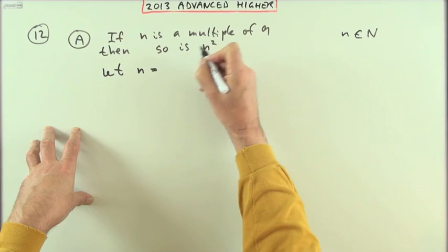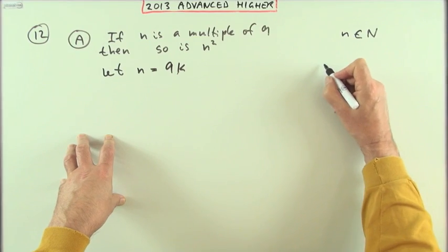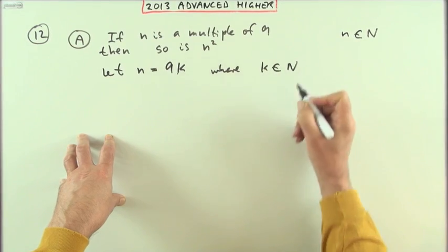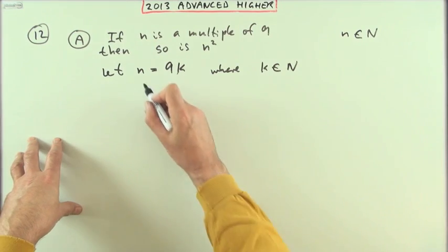Where k will be a natural number. And they're going for a natural number this time rather than positive integers. Well, if that's the case...